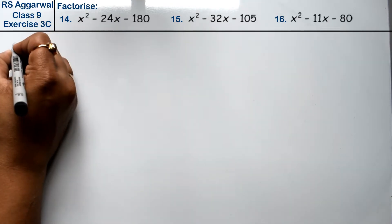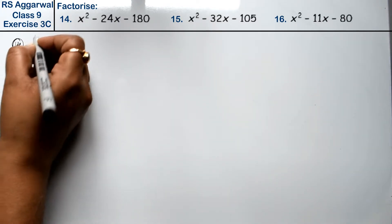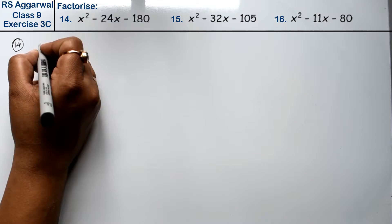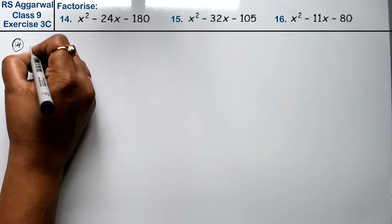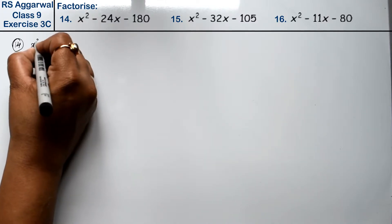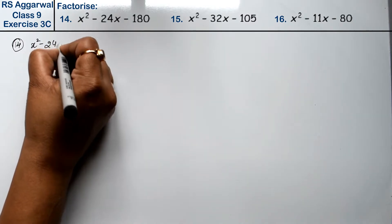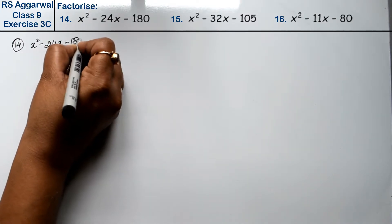Let's do question number 14 of exercise 3C, that is factorization of polynomials. Question number 14 is x squared minus 24x minus 180.